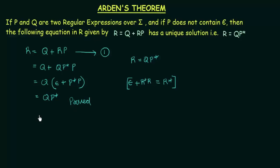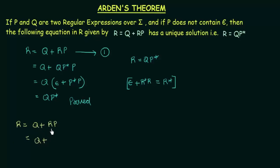Now let's prove the second part — we have to prove that this is a unique solution, meaning this is the only solution to this equation. In order to do that, let me take the equation again: r = q + rp. Now, in this equation, let me replace r with this itself, that is q + rp. So we get: q + (q + rp)p.